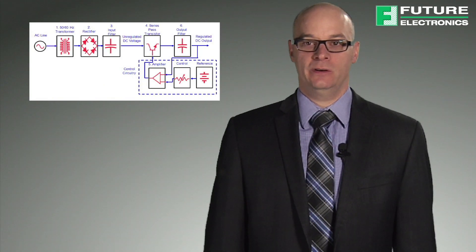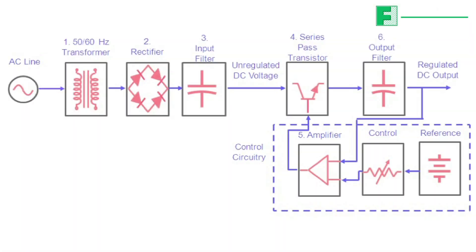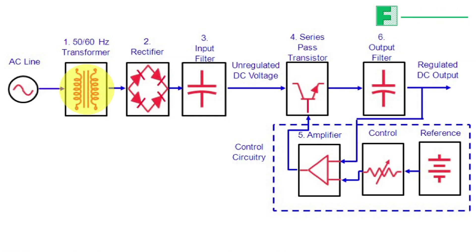The linear power supply shown here is fairly simple in concept and basic implementation. A transformer scales the AC line voltage to a value consistent with the required maximum DC output voltage level. The AC voltage is then rectified into a DC voltage. Large electrolytic capacitors filter the AC ripple voltage superimposed on the unregulated DC voltage.